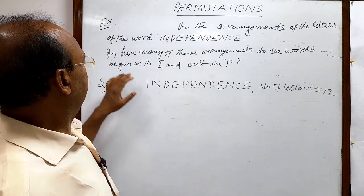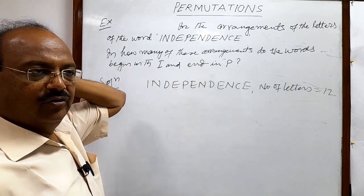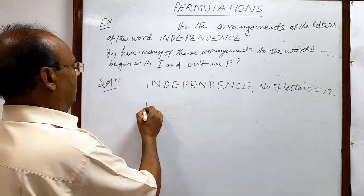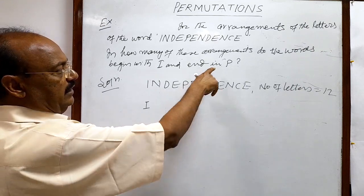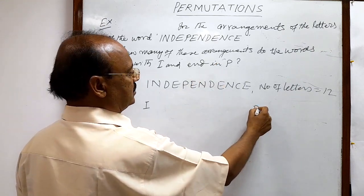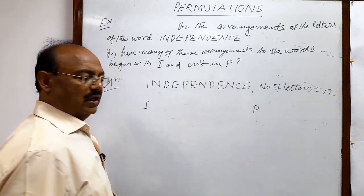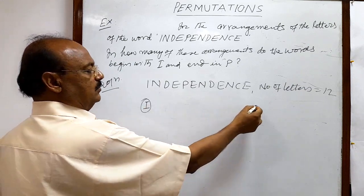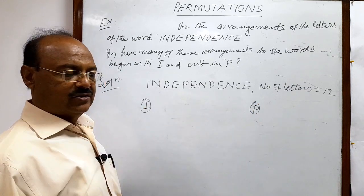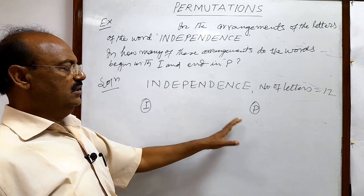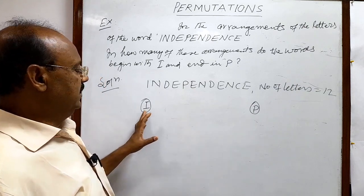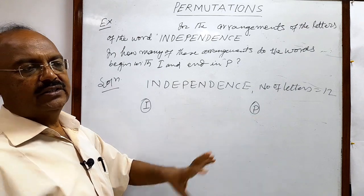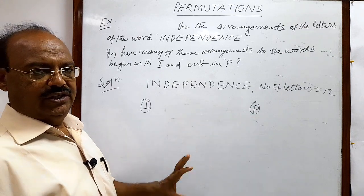What is the condition? The arrangement of words should start with I — I is the first letter — and end in P — P is the last letter. So this will be counted as a single arrangement because there is no case of any change in these arrangements. I is fixed at the first place and P is fixed at the last place, so there is no change in this condition.